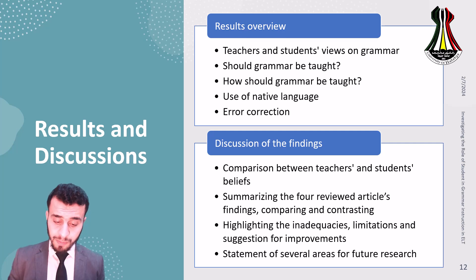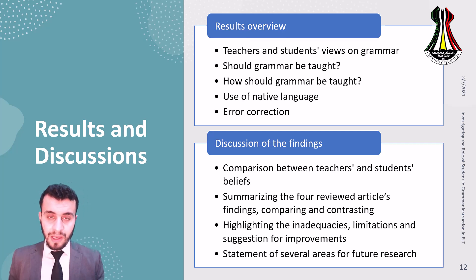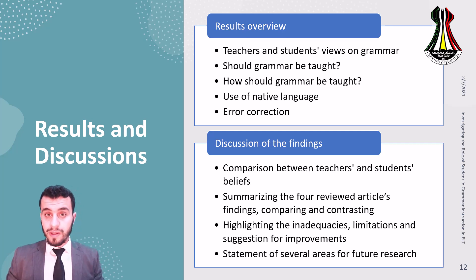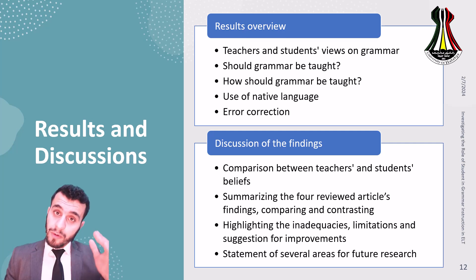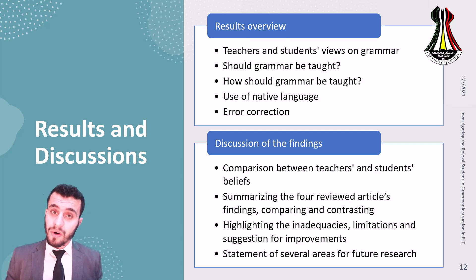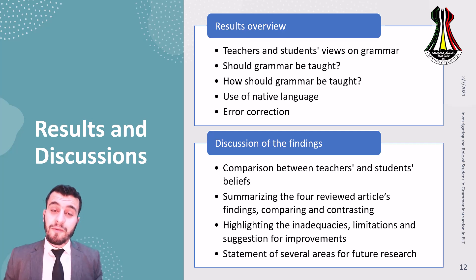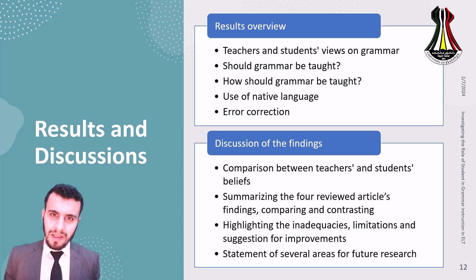I made a comparison between teachers' and students' beliefs. I cannot explain each point in detail here, but they are explained in detail in the review article. I summarized the findings of all four reviewed articles, comparing and contrasting them. I also highlighted the inadequacies and limitations across all four articles. Some studies reviewed only 34 students and 12 teachers, or 26 teachers and 40 students — these are small numbers that cannot yield fully accurate answers.